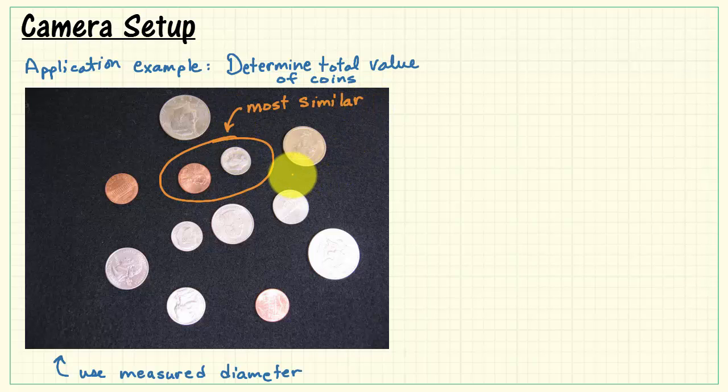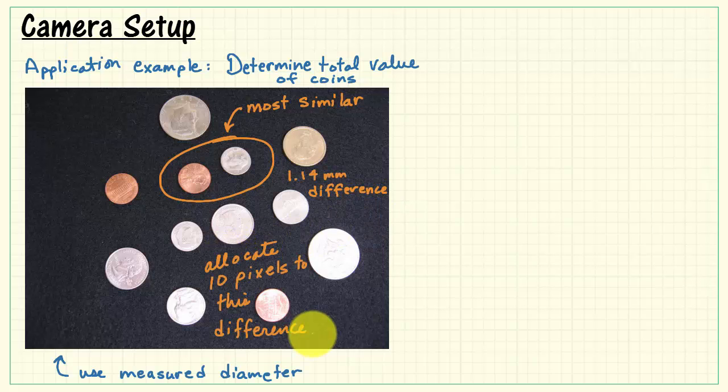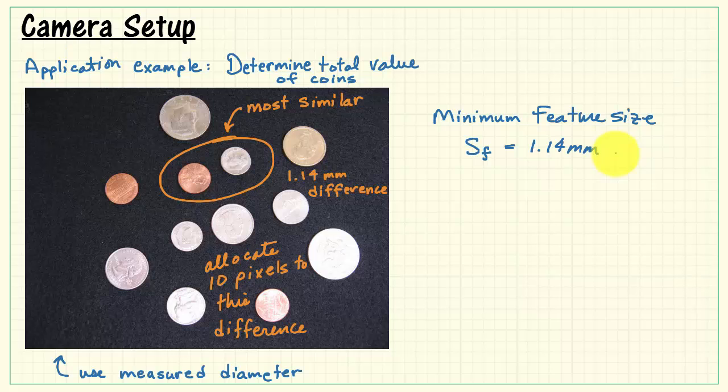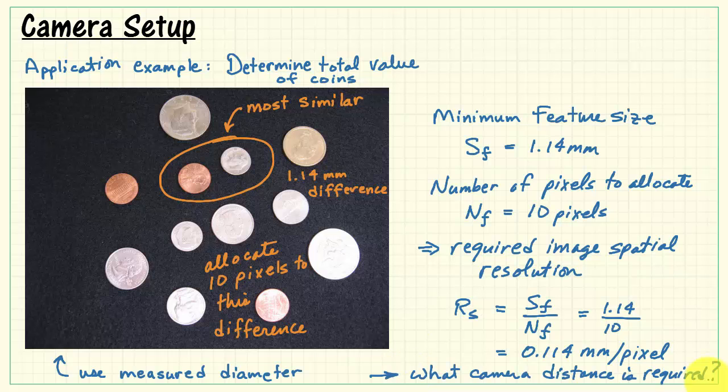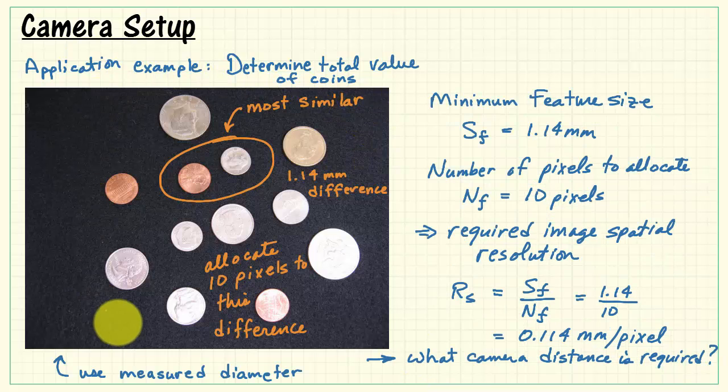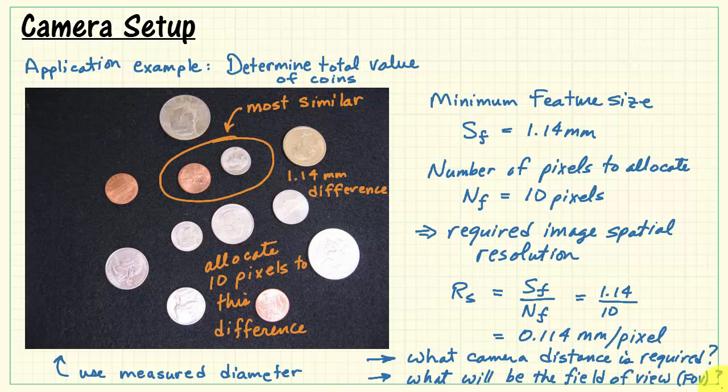These two most similar coins have a difference in diameter of 1.14 millimeters. I'm going to make the decision to allocate 10 pixels to this difference, and that should be enough to be able to differentiate those two diameters. Minimum feature size, 1.14 millimeters. Number of pixels to allocate is 10. That means the required image spatial resolution is the ratio of those two numbers. That gives 0.114 millimeters per pixel. Now, we need to determine what camera distance is required to obtain that spatial resolution, and then also what will be the field of view at that camera distance.